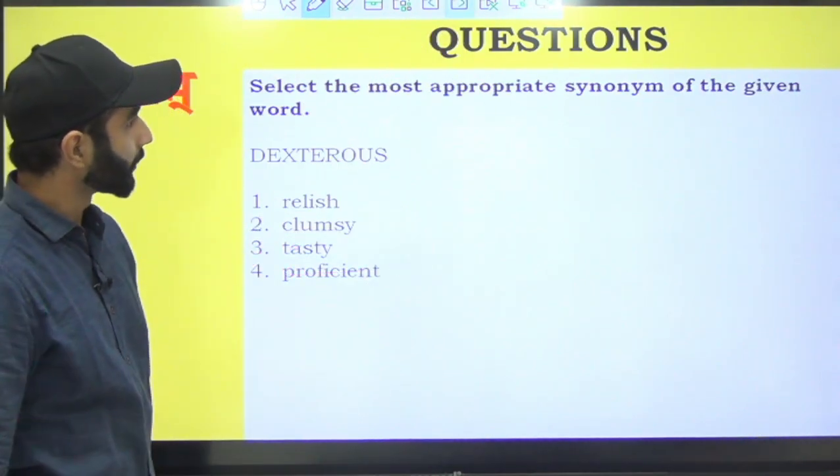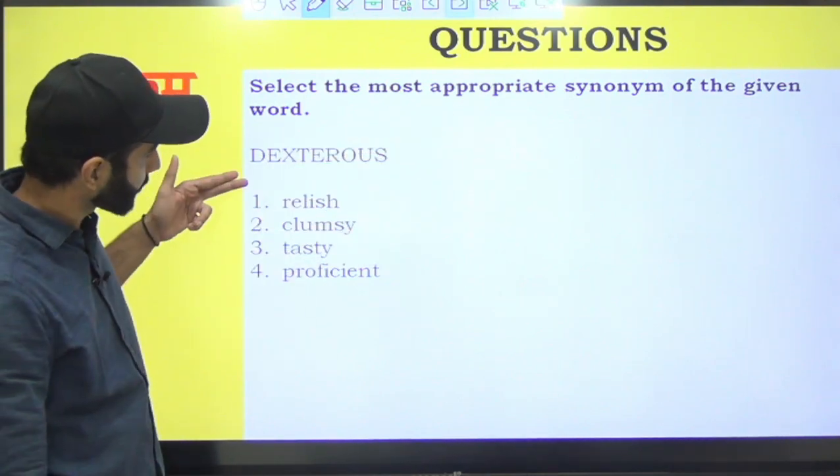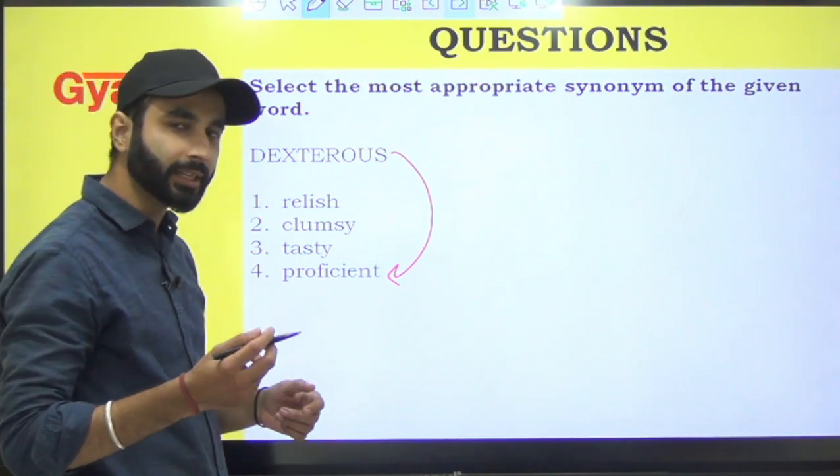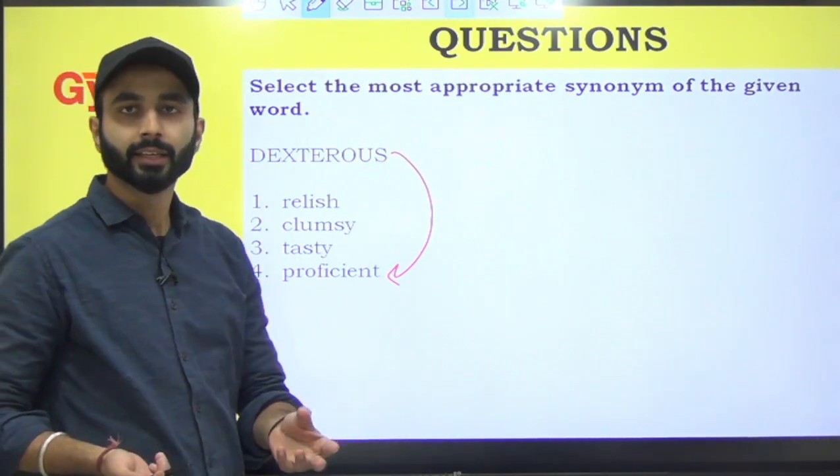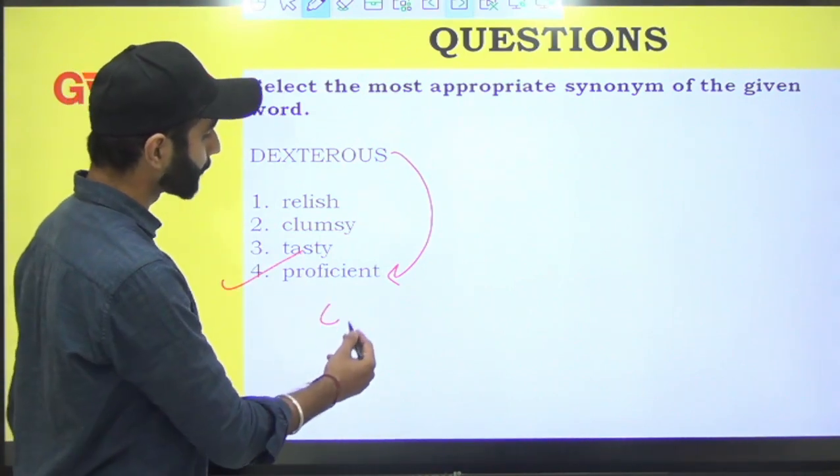The word is dexterous. Dexterous ka aapko synonym batana hai. Dexterous ka synonym hoga one who is very proficient with hand work. Koi kaam karne mein bahut zyada maahir hai, especially hands related. Like painter, carpenter, plumber. So answer is proficient.